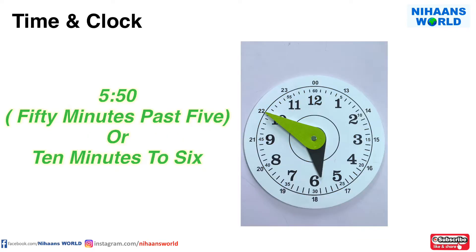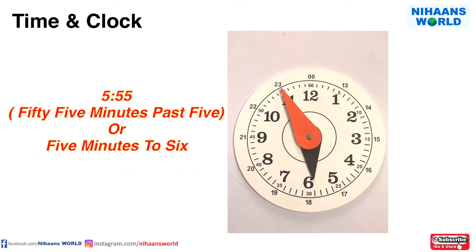In this clock, the hour hand is at 6 and the minute hand is at 10, so the time is 50 minutes past 5 or 10 minutes to 6. In this clock, the short hand is at 6 and the long hand is at 11. Then the time is 55 minutes past 5 or 5 minutes to 6.